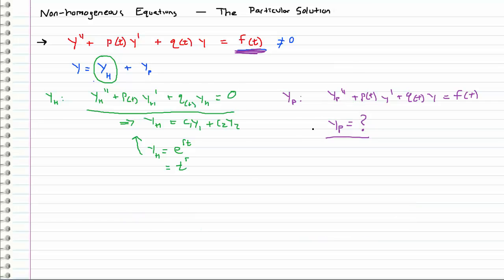We will take a look at that when we actually work out some examples, and we'll go through all the common examples and different methods that we are going to use in order to pick our yp form that we are going to assume. But really, we go about it the same way. We assume some arbitrary form and then we differentiate it twice.